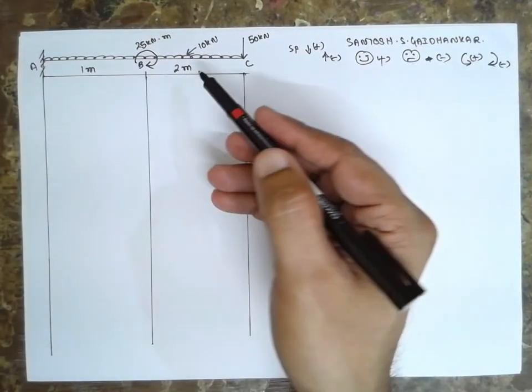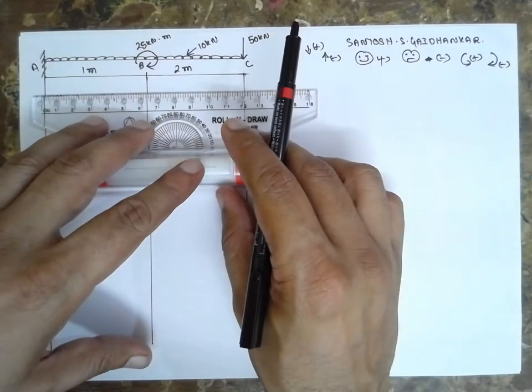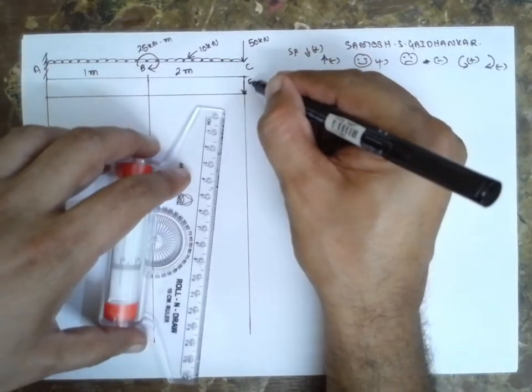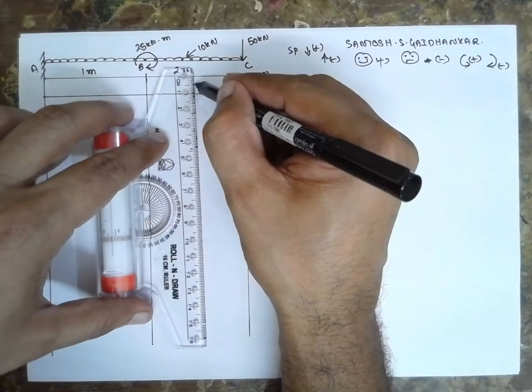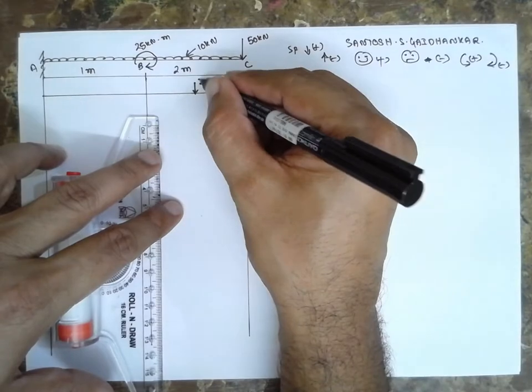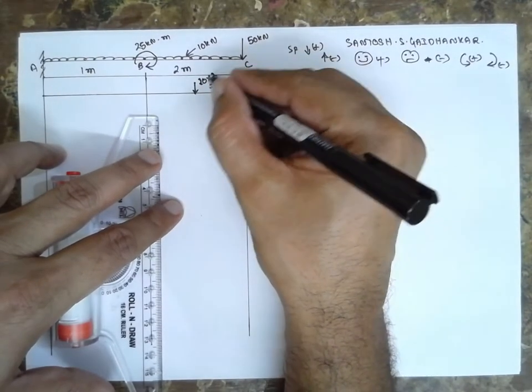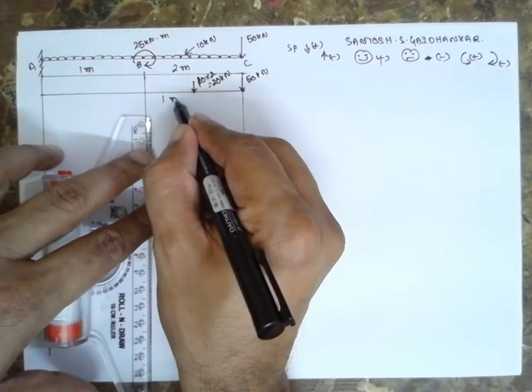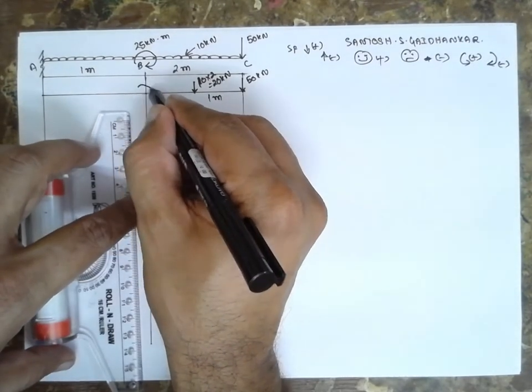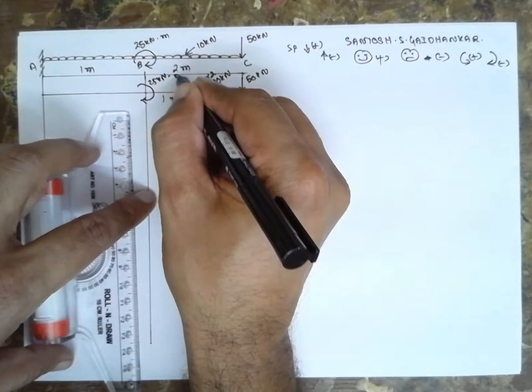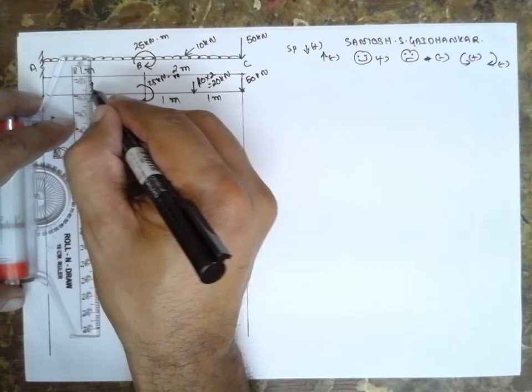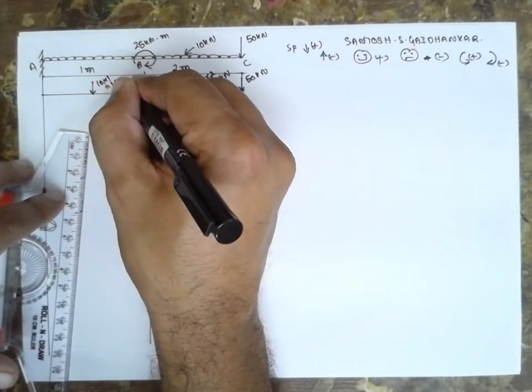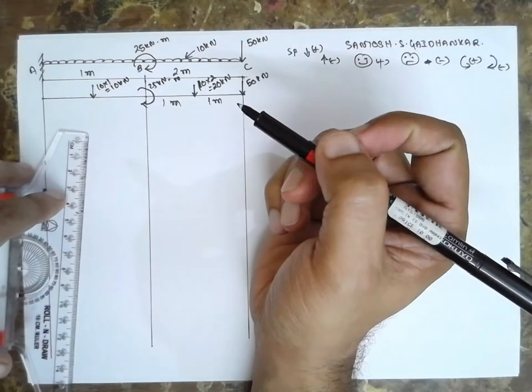First I will convert into a point load here. First is 50 kN. Next point load exactly at the center you have to draw for UDL. That is 10 times 20. 10 times 2 is nothing but 20 kN. And half will be 1 meter this side and 1 meter this side. And there is a couple here, 25 kN meter. Again there is UDL exactly at the center. The arrow is downward. It is 10 times 1, that is 10 kN.